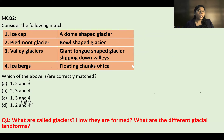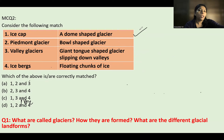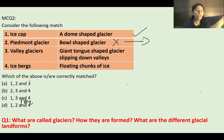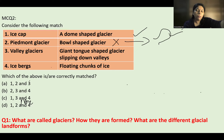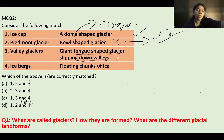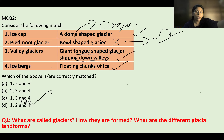The next MCQ asks to match glacier types: ice cap — dome-shaped glacier (correct); piedmont glacier — bowl-shaped glacier (wrong, that is a cirque); valley glacier — giant tongue-shaped glacier flowing down valleys (correct); icebergs — floating chunks of ice (correct). The wrong match is piedmont glacier, so option C is correct.